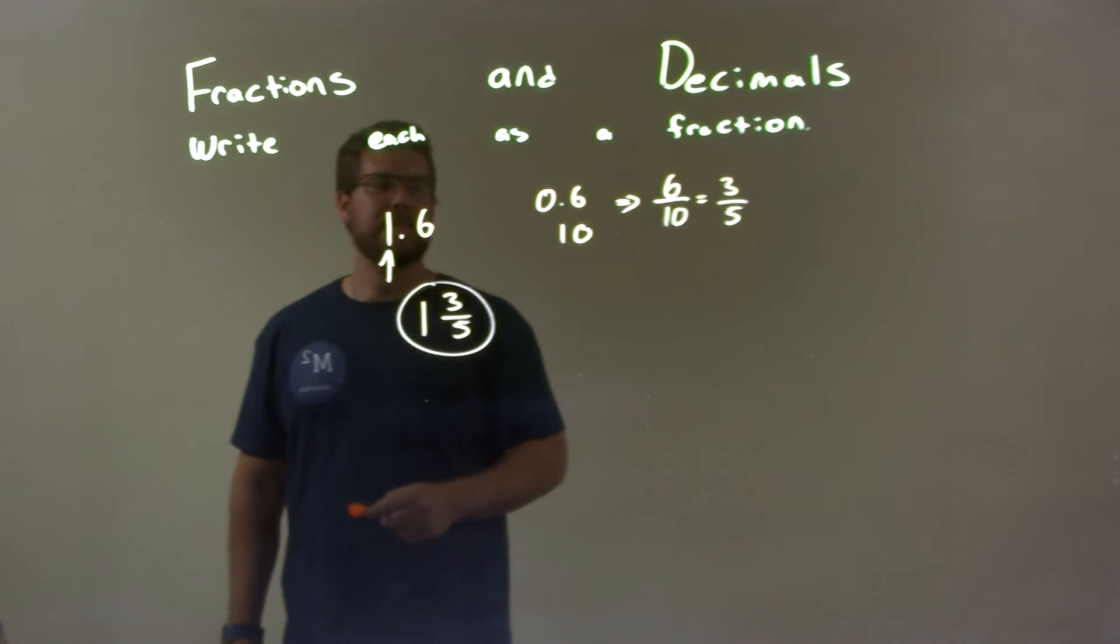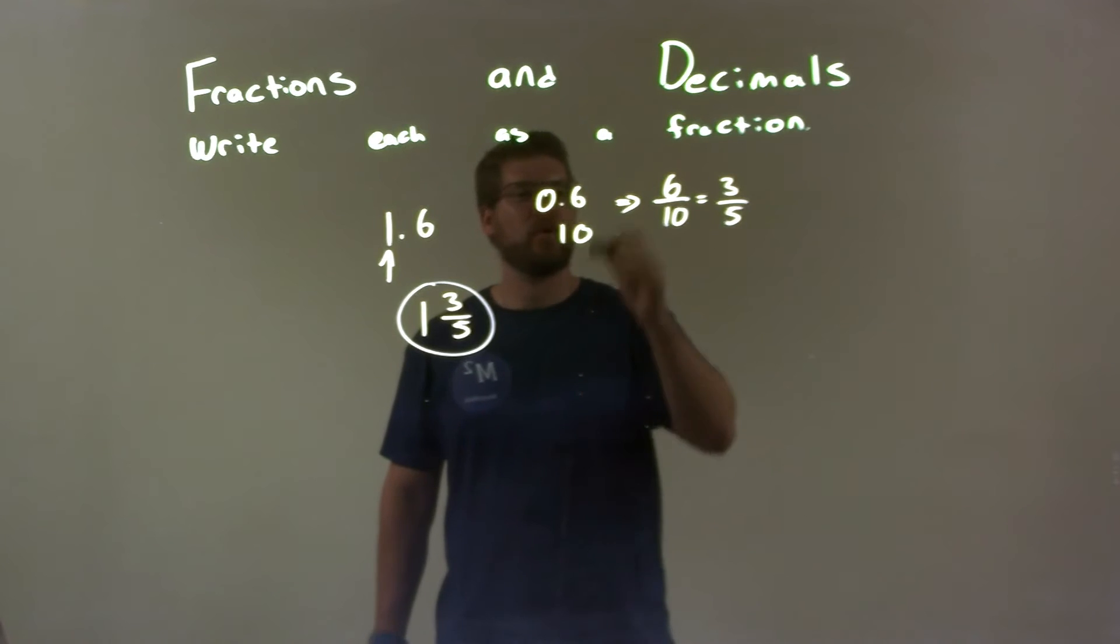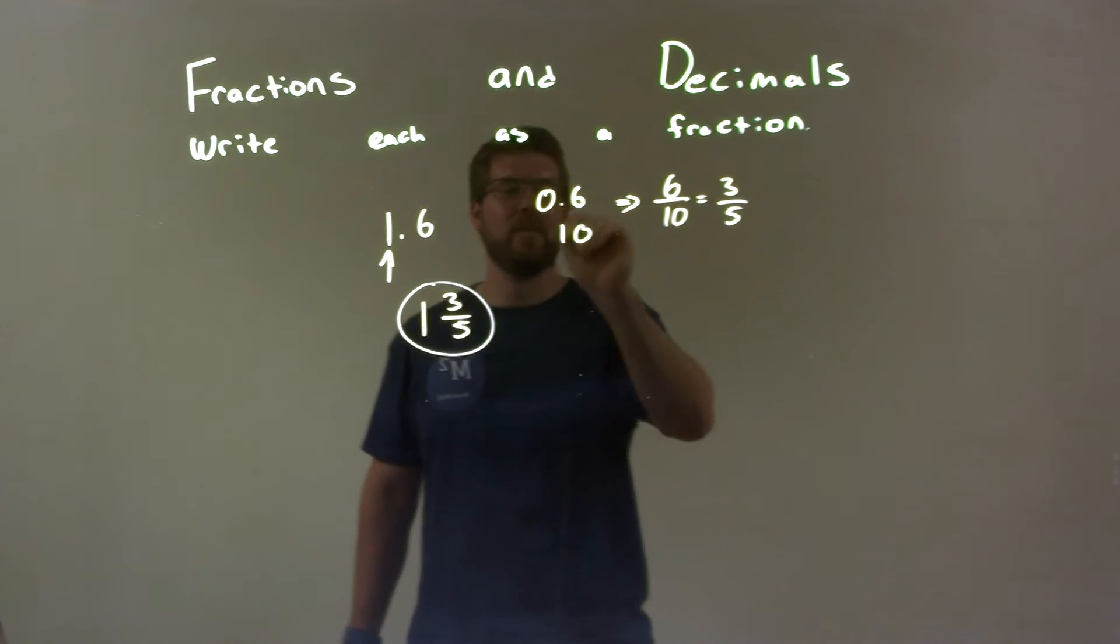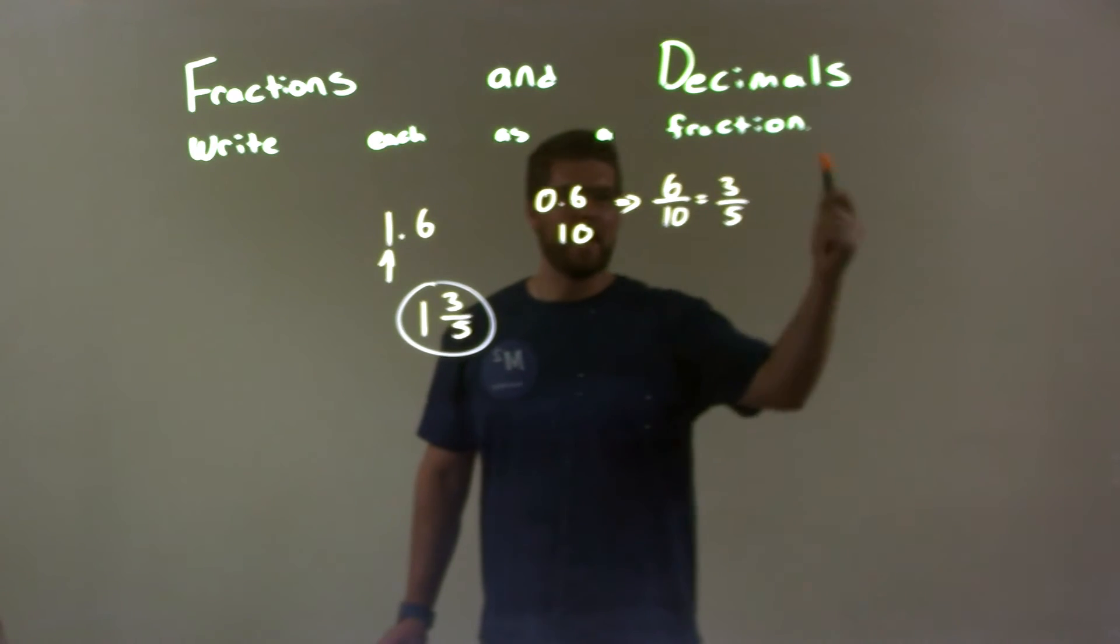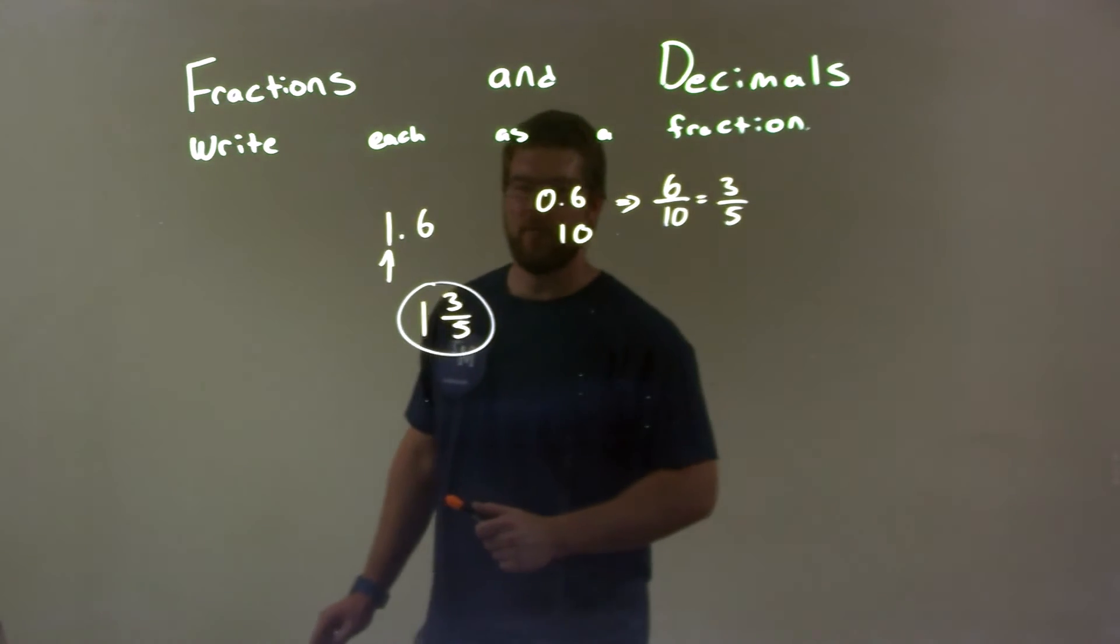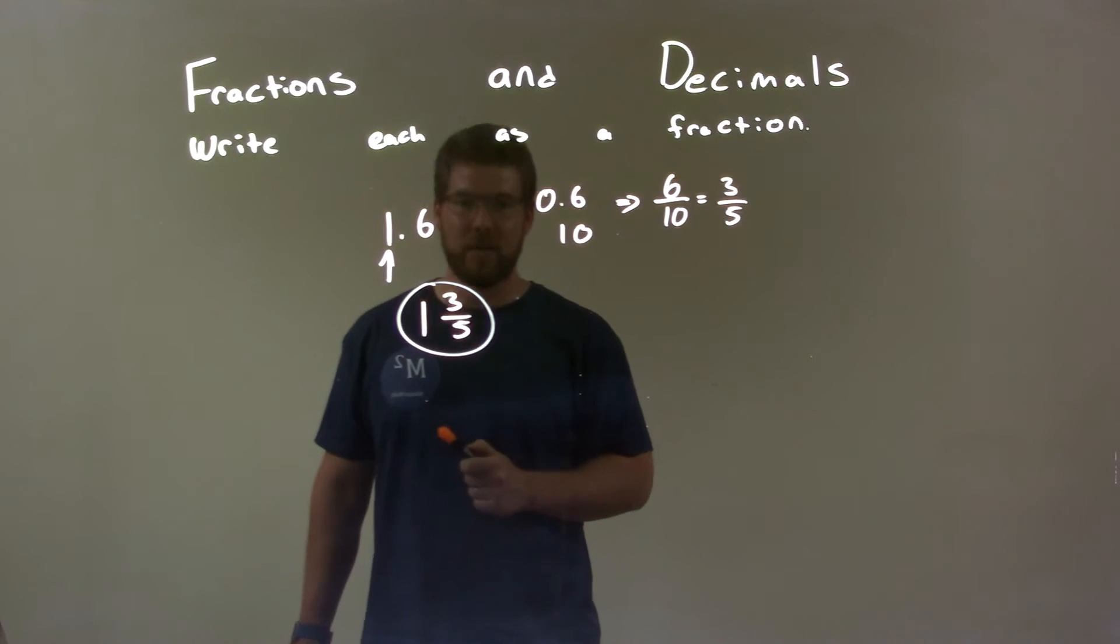So quick recap, we're given 1.6, and we have to write that as a fraction. I took the 0.6, put it over, and recognized that's the same thing as 6 over 10. That's simplified to be 3 fifths. I combine that with the 1 that was out front, and so now our final answer is 1 and 3 fifths.